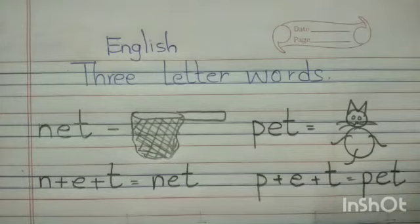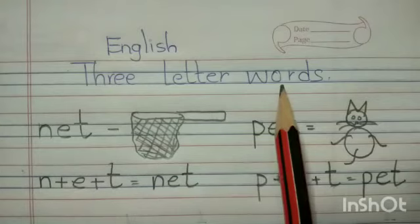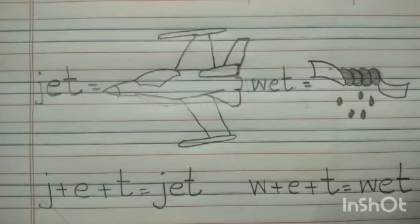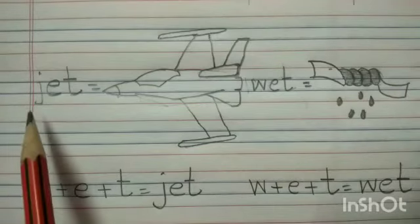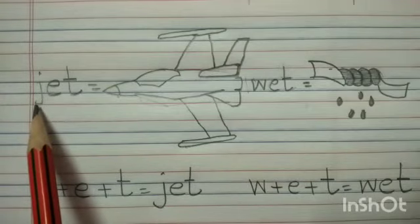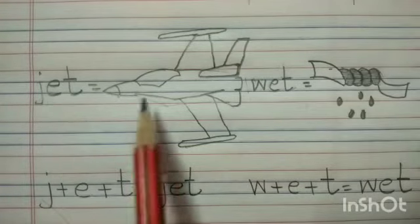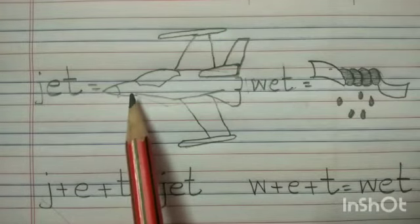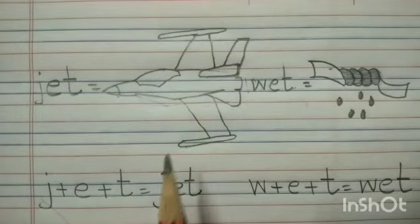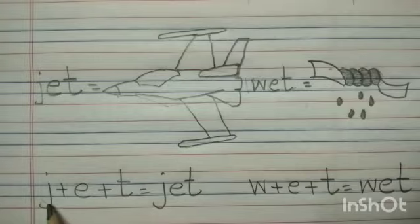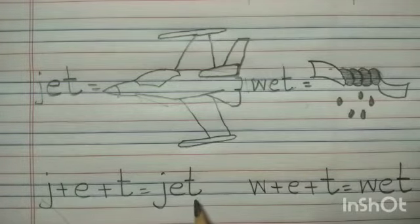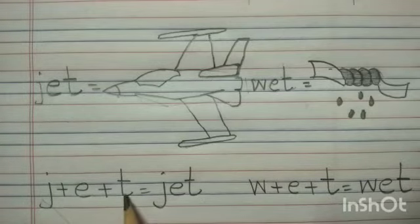So the words which have 3 letters are called 3 letter words. The next word is Jet. J-E-T, Jet. Jet means it's a plane. J plus E plus T, J-E-T, Jet. First letter, second letter, third letter — J-E-T, Jet.